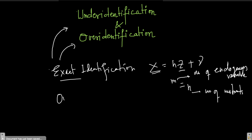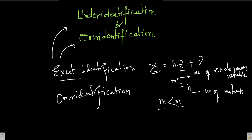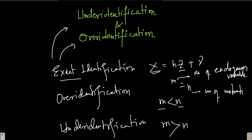When we say over-identification, in that case I will have more instruments than endogenous variables — so m is less than n, I have more instruments than endogenous variables. Under-identification, quite obviously, is the reverse: m is greater than n. An example of over-identification: I have variable x and two instruments, z1 and z2. Whereas for under-identification, if I have an endogenous variable that does not have an instrument, that is a case of under-identification.